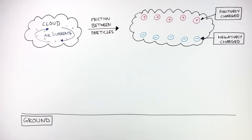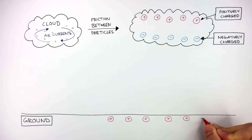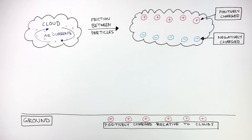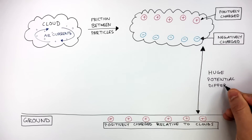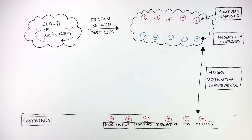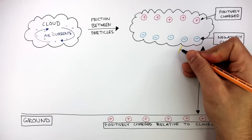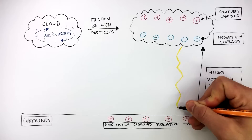Relative to the negatively charged area of the cloud, the ground is now positively charged — so the ground is positively charged relative to the clouds. Because of this there is now a huge potential difference between the clouds and the ground. So when a lot of charged particles build up in the clouds, lightning happens. Lightning is when charged particles travel from the clouds to earth.